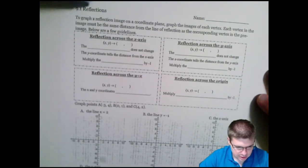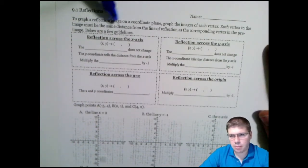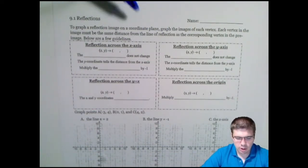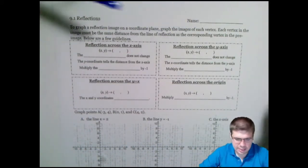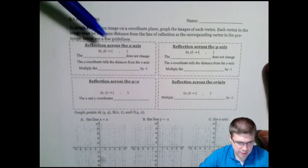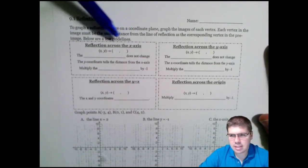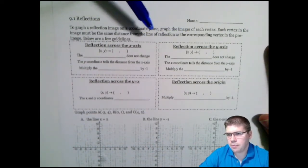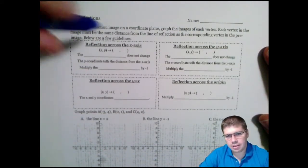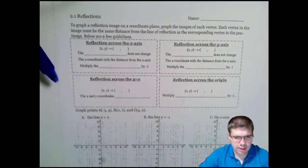So we're going to start with reflections. A reflection is when we reflect an image — this can be more than just lines, but shapes and so on. We're going to do them across lines and through vertices. So we're always going to be taking each vertex of the image, like the corners of the triangle or whatever shape you're dealing with, and move them the same distance from the line as the corresponding vertex in the pre-image.